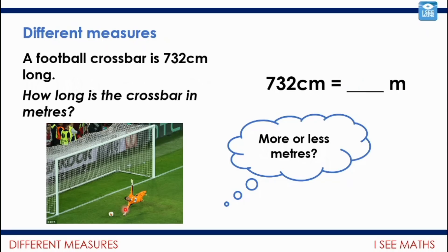A football crossbar is 732 centimeters long. How long in meters? If I measure it in these tiny units of centimeters, it's 732. Will it be more or less meters? Meters are bigger, and that means there's less—bigger means less because each one meter is more than one centimeter. We end up with 7.32 meters as being the same length.